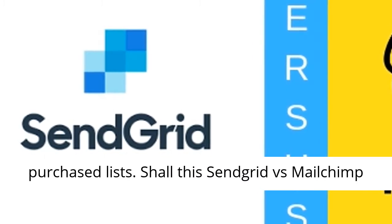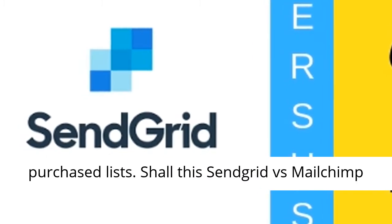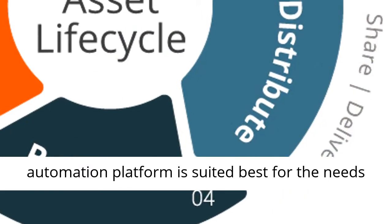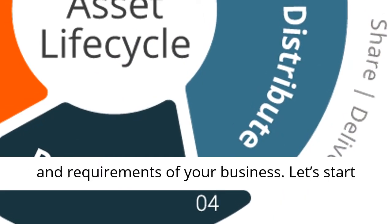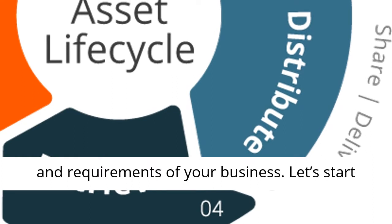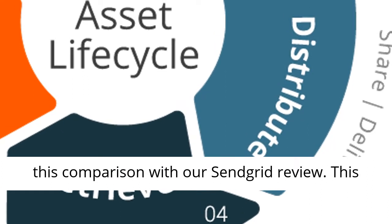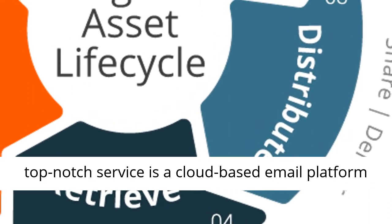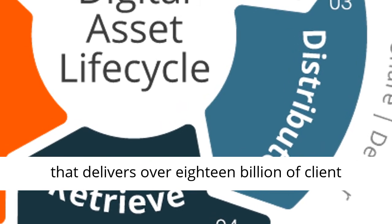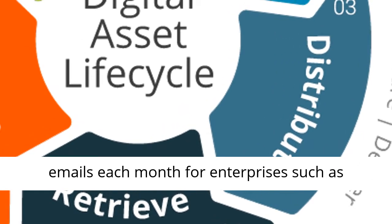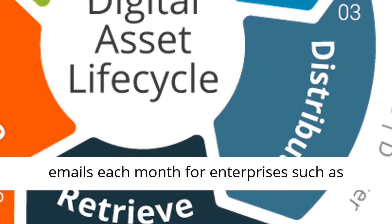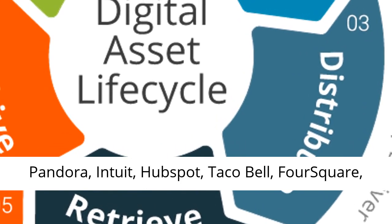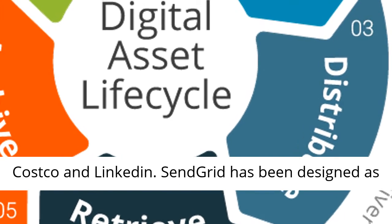Shall this SendGrid vs. MailChimp review help you determine which marketing automation platform is suited best for the needs and requirements of your business? Let's start this comparison with our SendGrid review. This top-notch service is a cloud-based email platform that delivers over 18 billion client emails each month for enterprises such as Pinterest, Uber, Airbnb, Walmart, Spotify, Pandora, Intuit, HubSpot, Taco Bell, Foursquare, Costco, and LinkedIn.